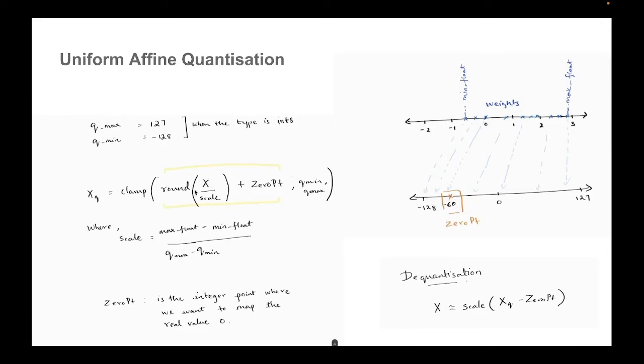We have x, which is the float value. We divide it by scale to find the number of steps. And we round it off to get the steps in an integer. We offset by adding the zero point to it so that the zero gets mapped to the correct integer. Then finally, what we do is we clamp this so that anything that goes out of this bound, q max or q min, is brought into that range. So what clamp does is if it goes above q max, it brings it back to q max. If it goes below q min, it brings it back to q min. So that is all clamp is doing, just to make sure that the final output is within this range. So that's how you get the quantized value.